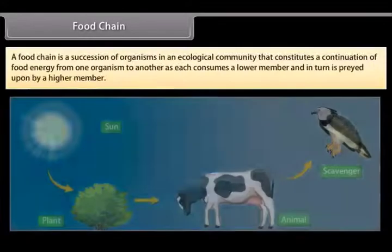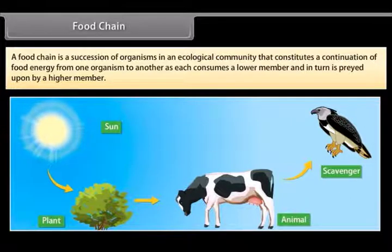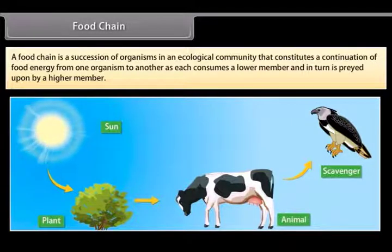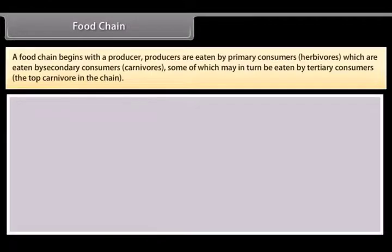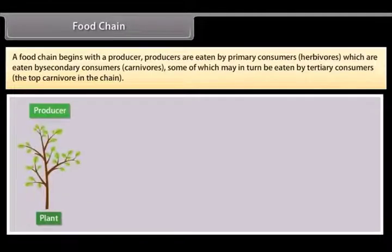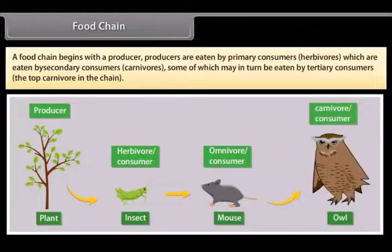Food chain: A food chain is a succession of organisms in an ecological community that constitutes a continuation of food energy from one organism to another, as each consumes a lower member and in turn is preyed upon by a higher member. A food chain begins with a producer. Producers are eaten by primary consumers — herbivores — which are eaten by secondary consumers — carnivores — some of which may in turn be eaten by tertiary consumers, the top carnivore in the chain.